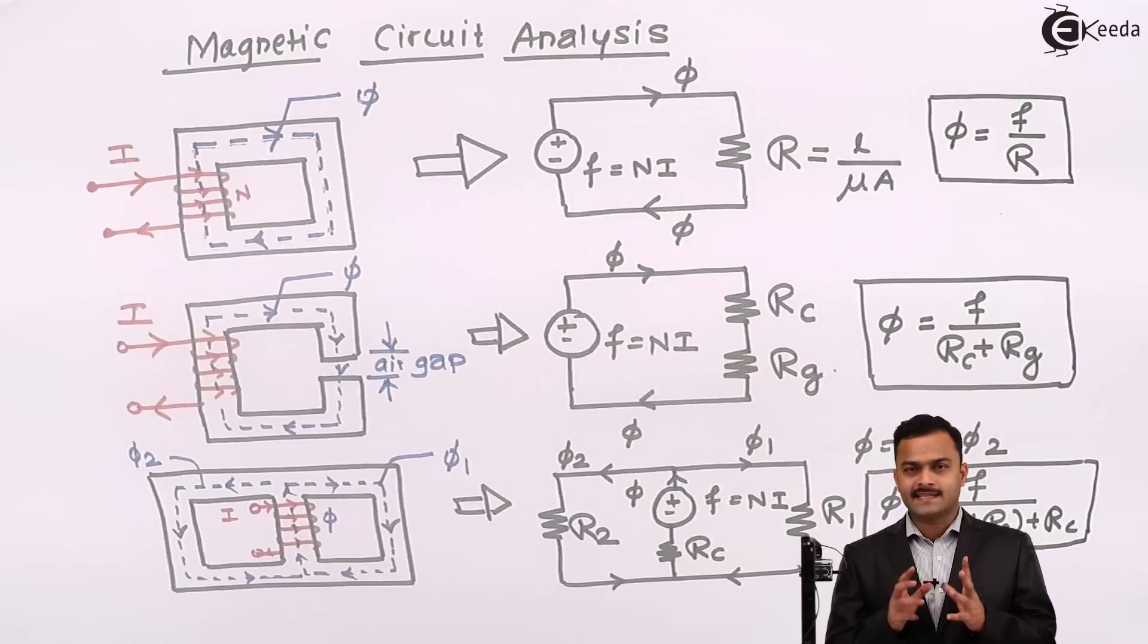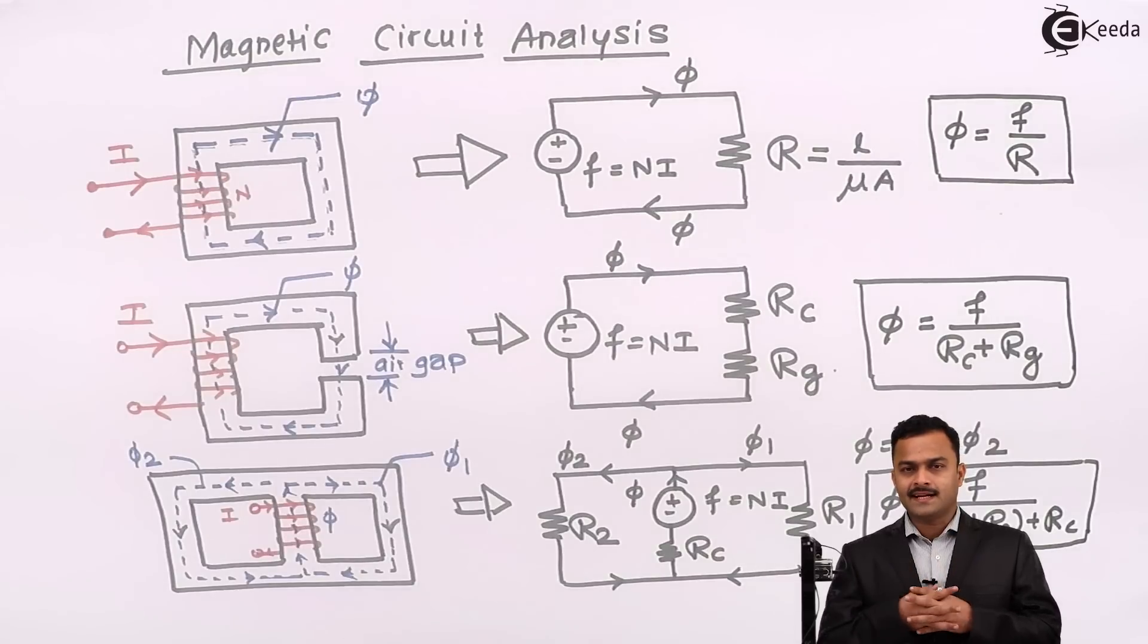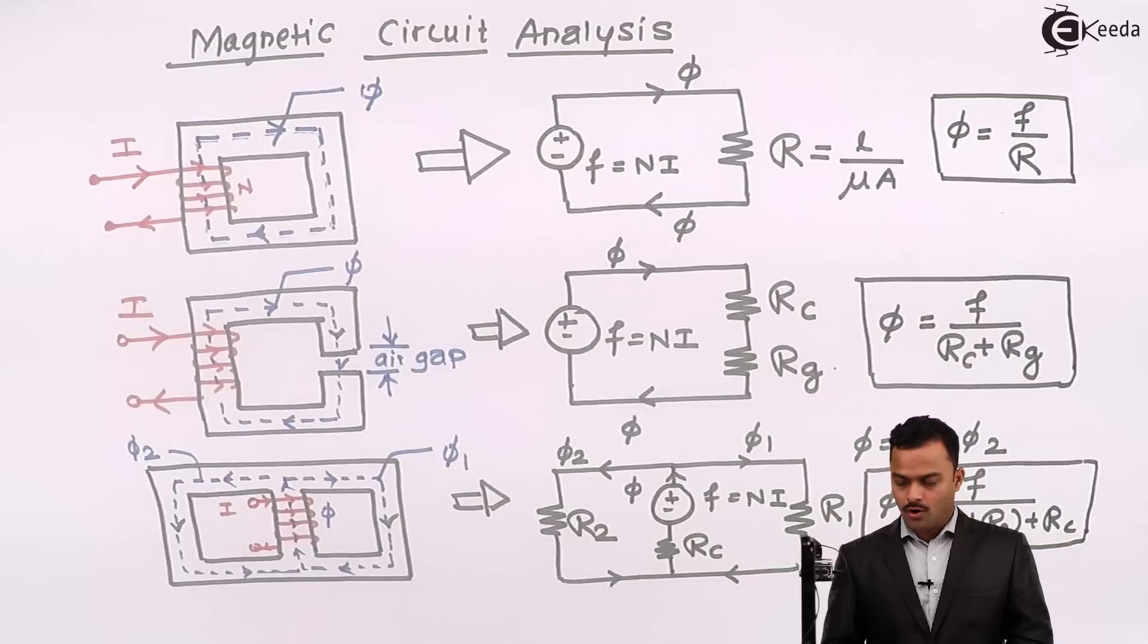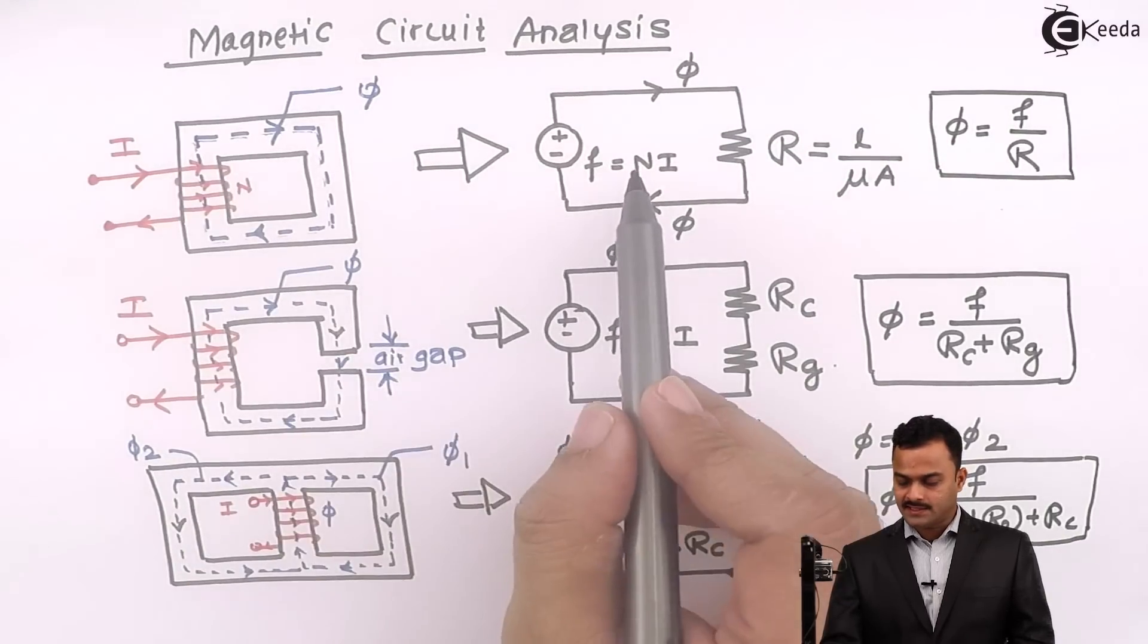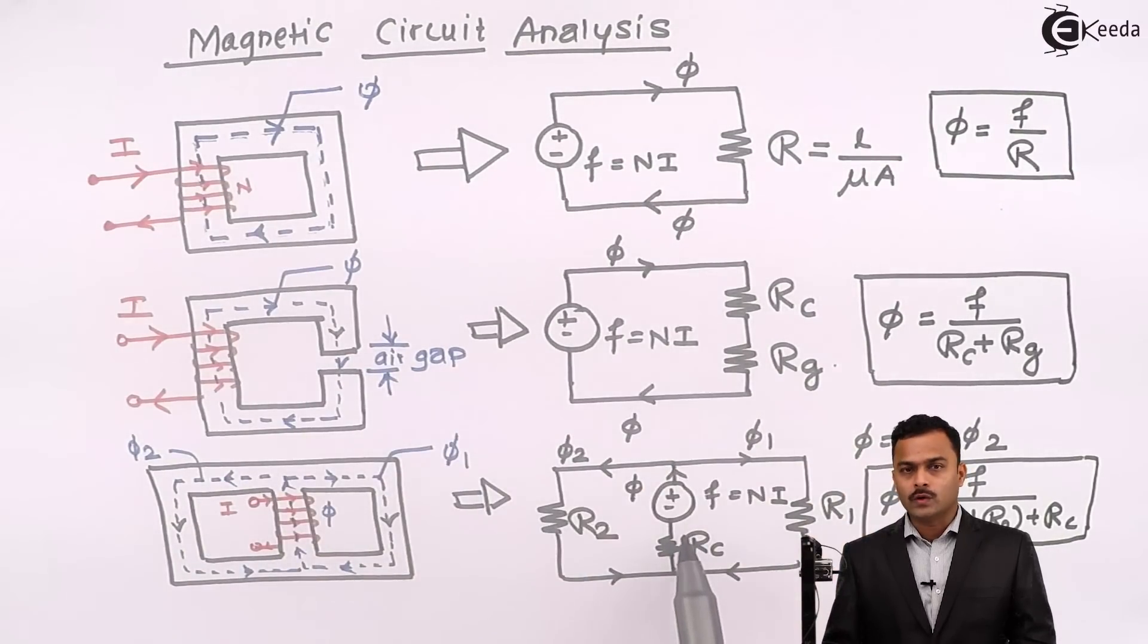So the number of fluxes in the same circuit will result in a number of reluctances. Here we have seen all types of magnetic circuits that will come along in our study and how they can be represented in electrical equivalence. Thank you.